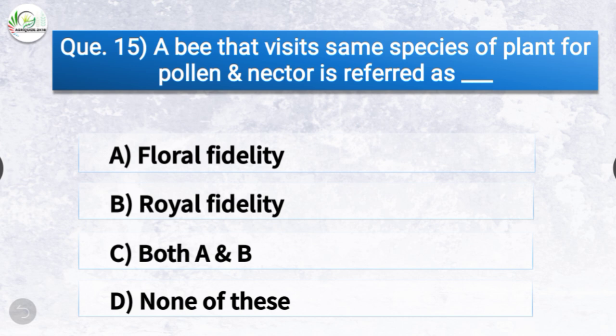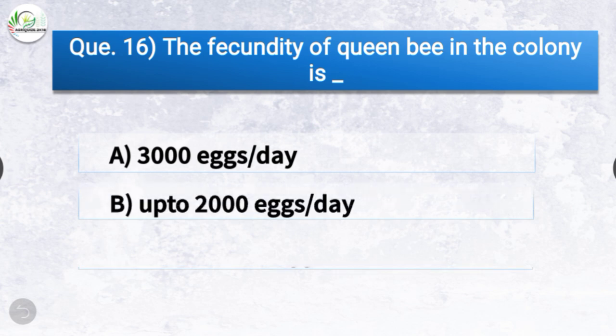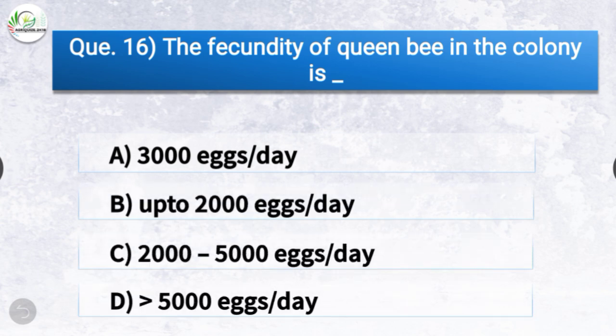Question number fifteen: A bee that visits the same species of plant for pollen and nectar is referred to as? The correct answer is option A, floral fidelity — a bee that visits the same species of plant for pollen and nectar is referred to as floral fidelity.